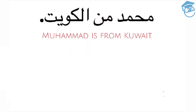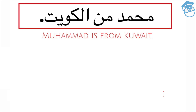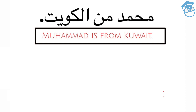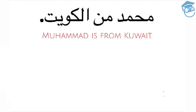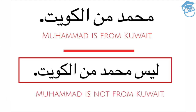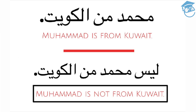Let's begin with a simple example to show how leysa is used in a sentence. Look at the sentence: Mohammedun minil Kuwait — it means 'Mohammed is from Kuwait.' When we add leysa to the beginning of the sentence, it becomes: Leysa Mohammedun minil Kuwait — 'Mohammed is not from Kuwait.' So leysa negates the sentence.